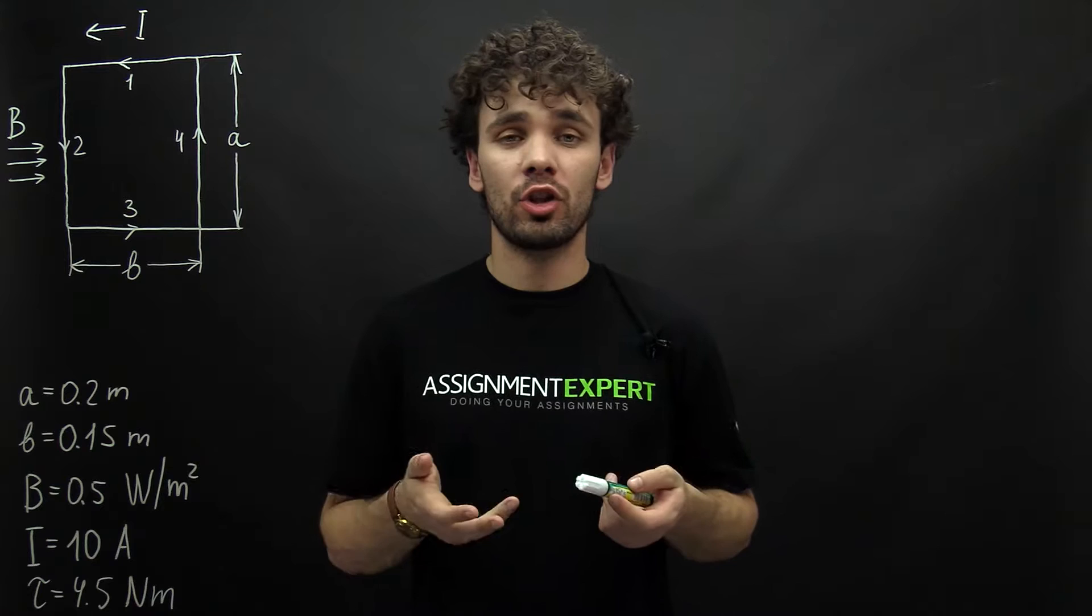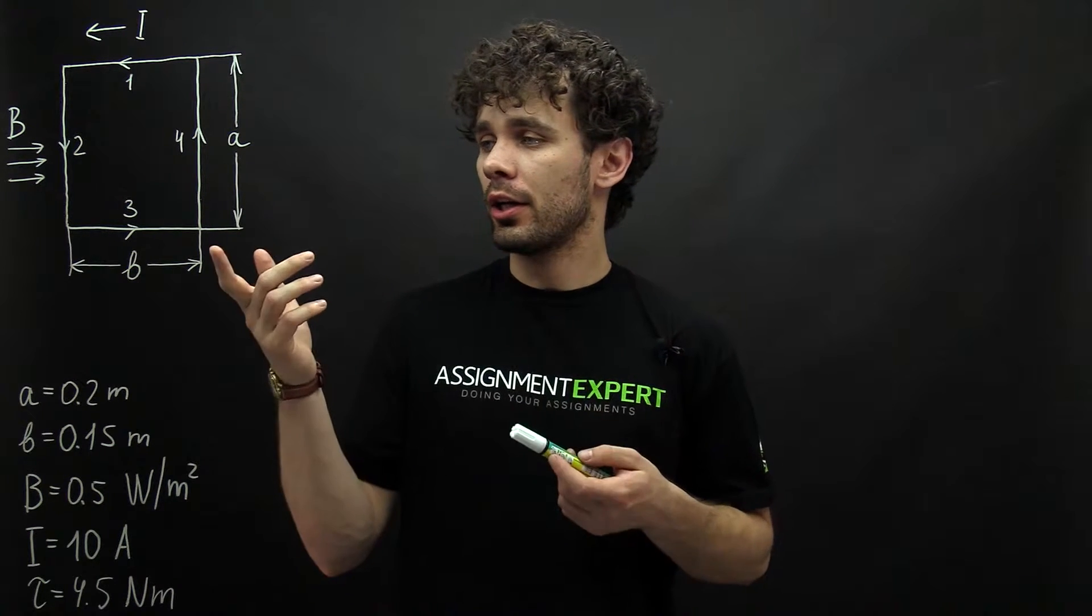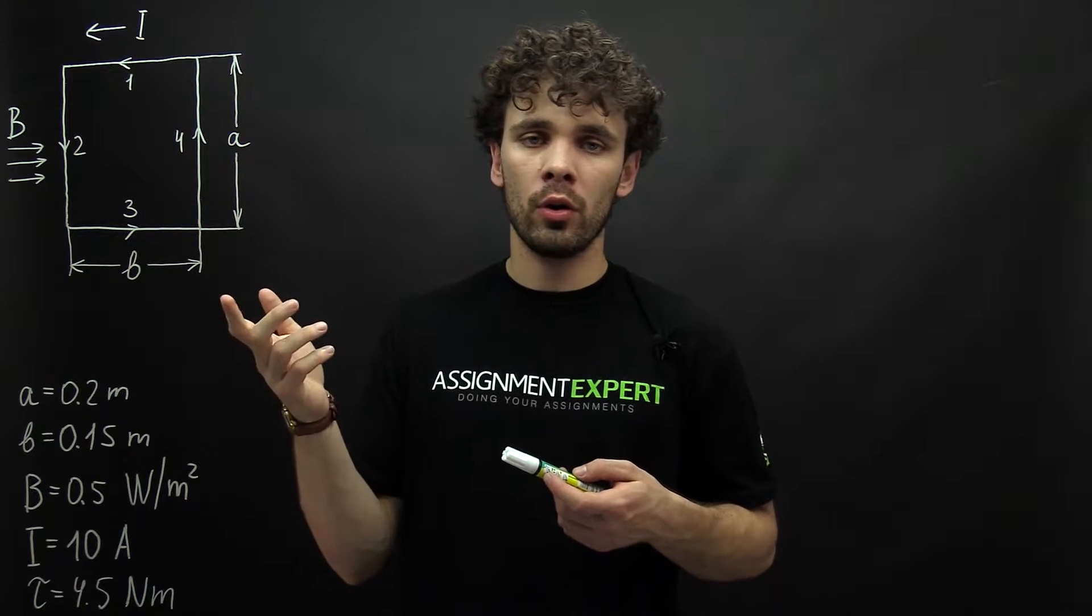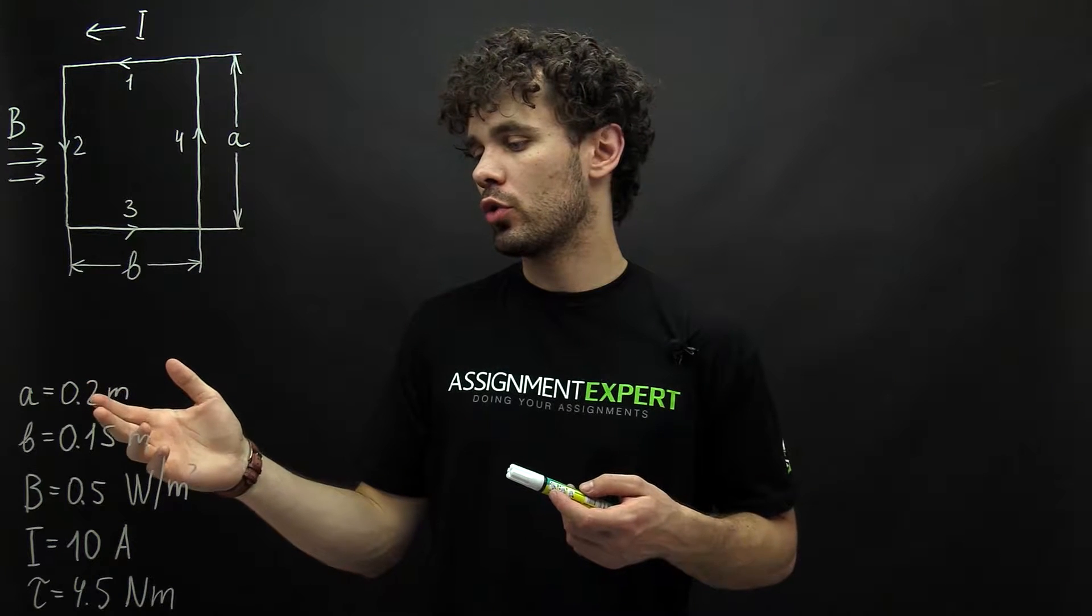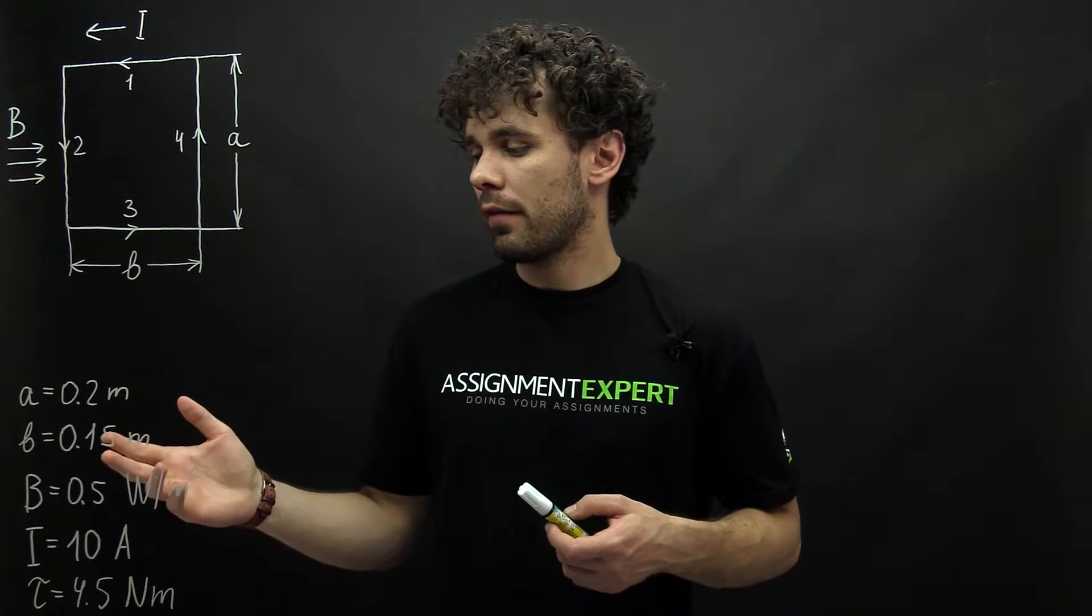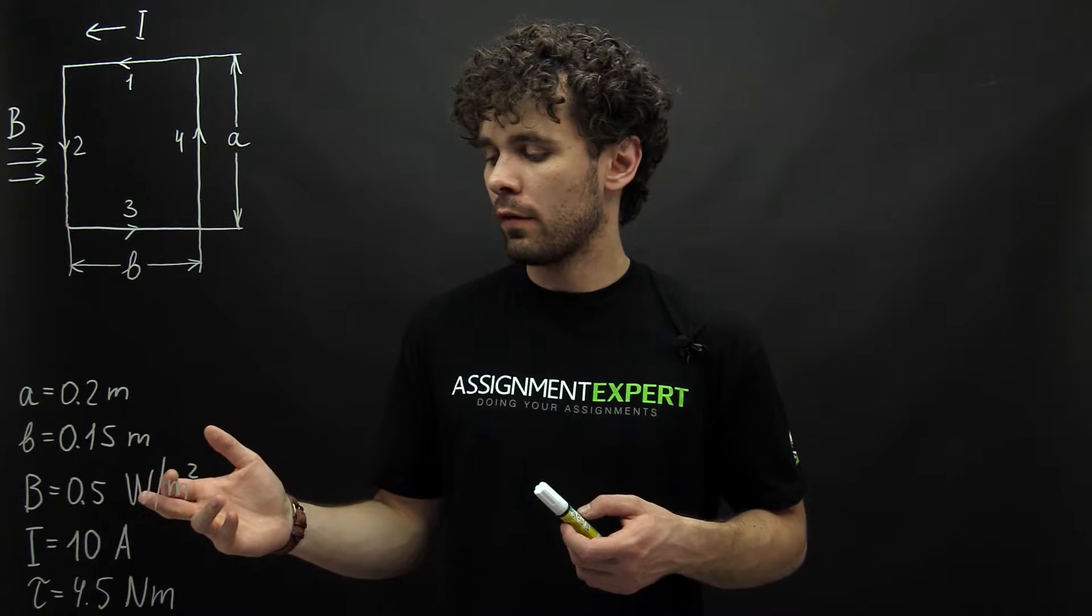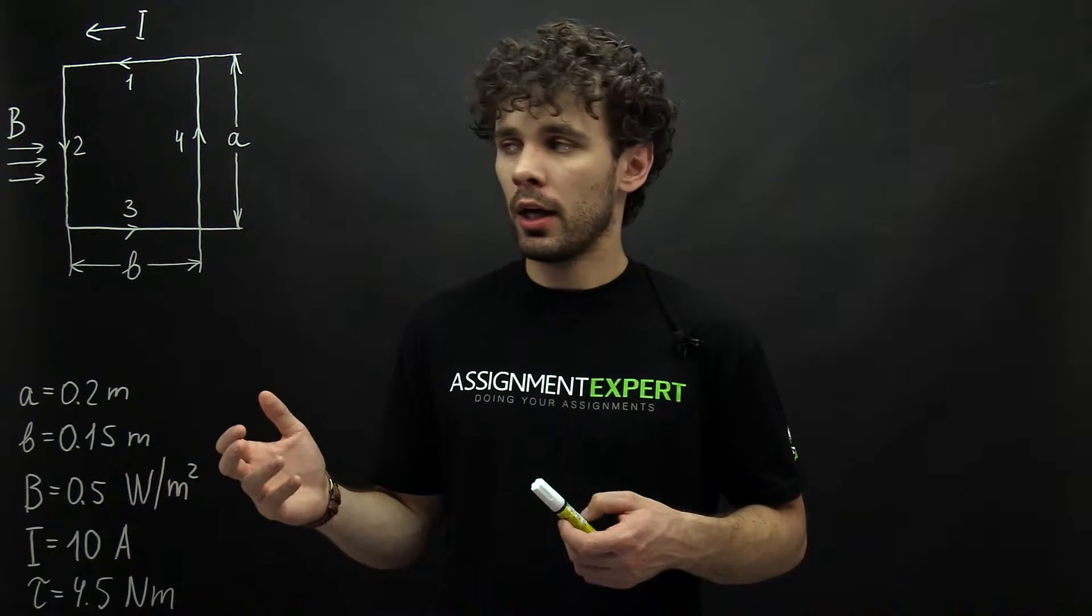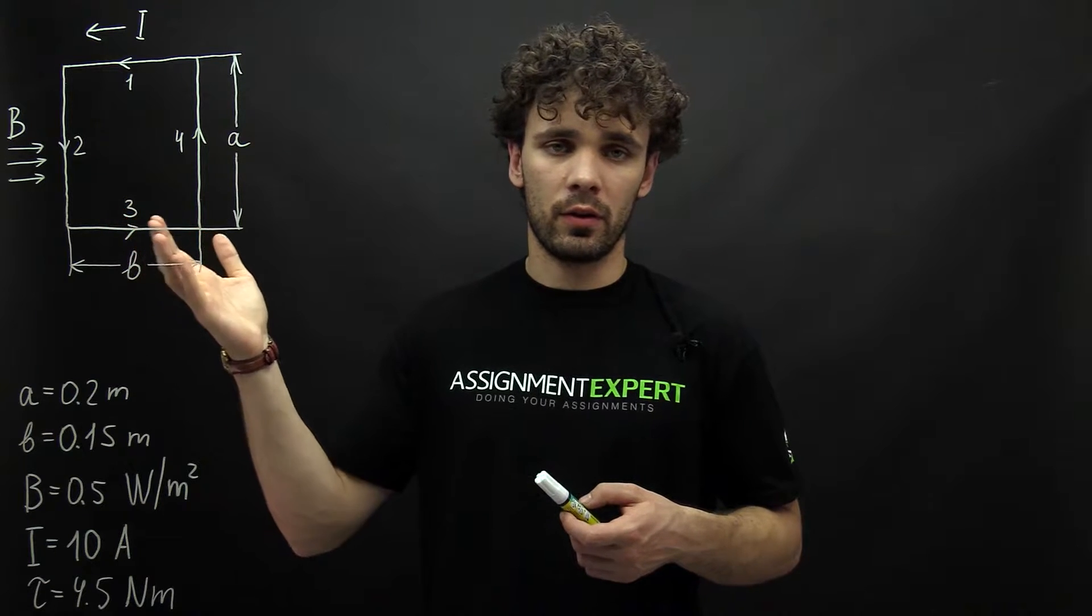Hi guys! You are watching Assignment Expert and here we have a rectangular coil with dimensions 0.2 and 0.15 meters. This coil is inside a magnetic field of 0.5 tesla and it is actually parallel to the field.